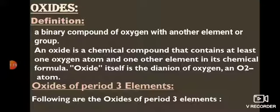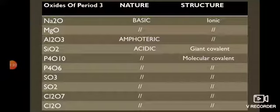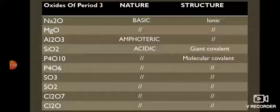The oxides of Period 3 Elements are: sodium oxide, magnesium oxide, aluminium oxide, silicon dioxide, phosphorus pentoxide (P4O10, dimer form; monomer P2O5), phosphorus trioxide (P4O6, dimer; monomer P2O3), sulfur trioxide, sulfur dioxide, dichlorine heptoxide, and dichlorine oxide. The first two — sodium oxide and magnesium oxide — are basic. Aluminium oxide is amphoteric. Silicon dioxide and the remaining oxides up to dichlorine oxide are acidic.